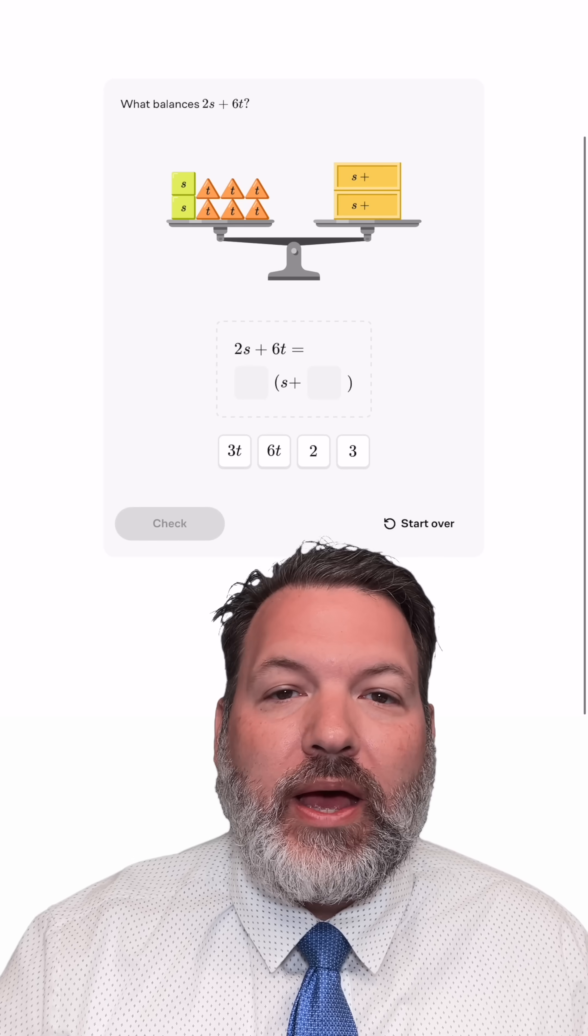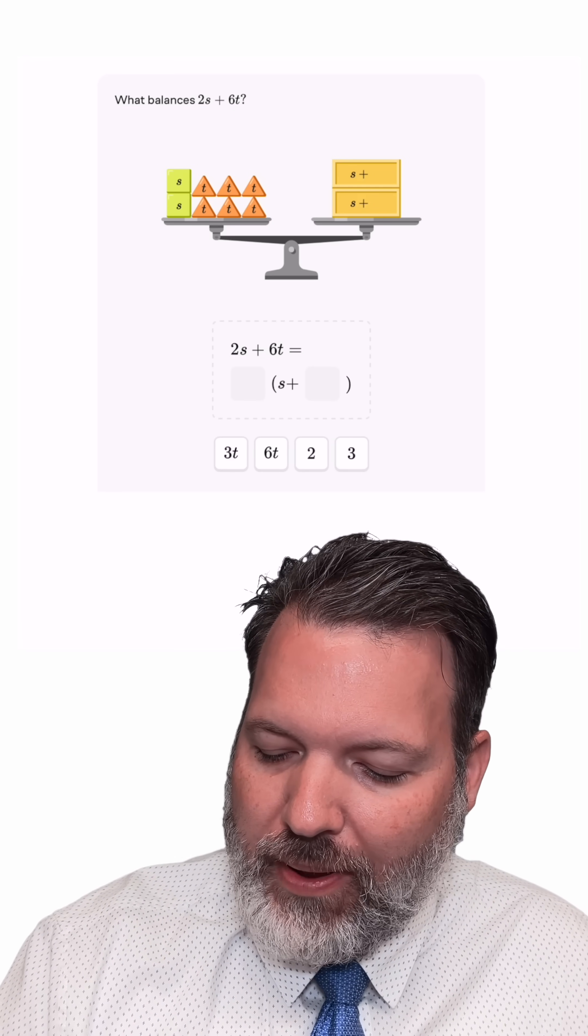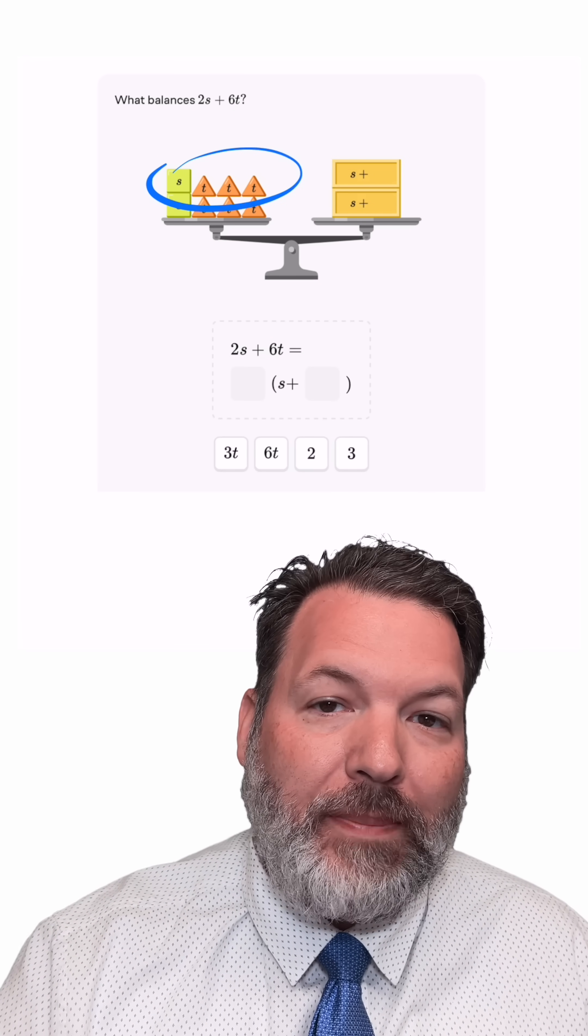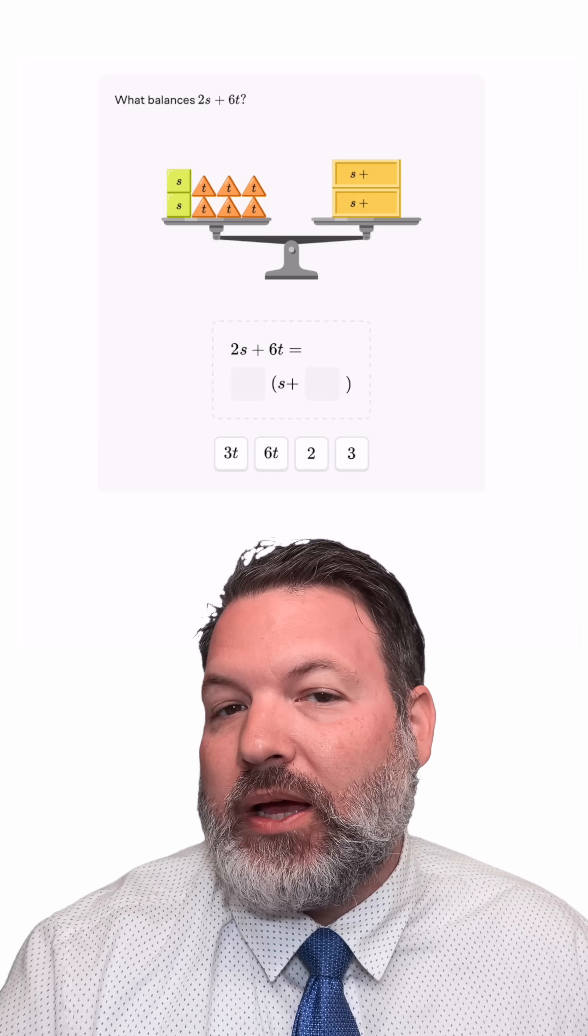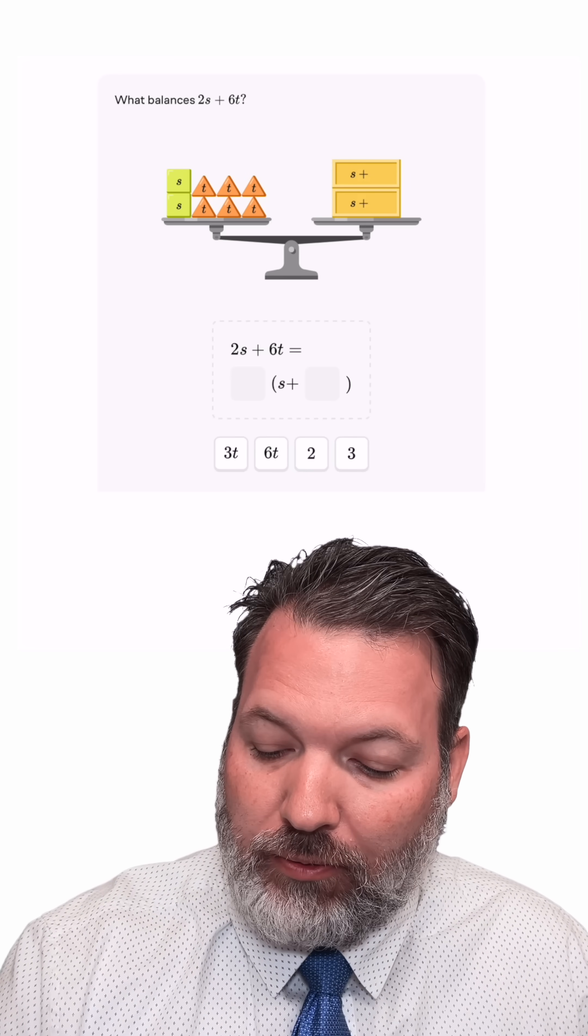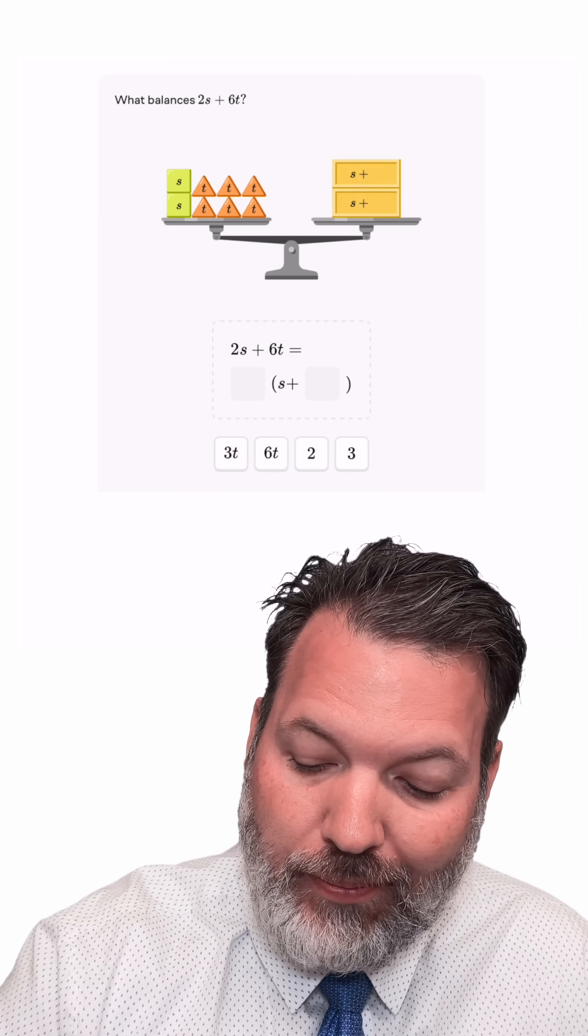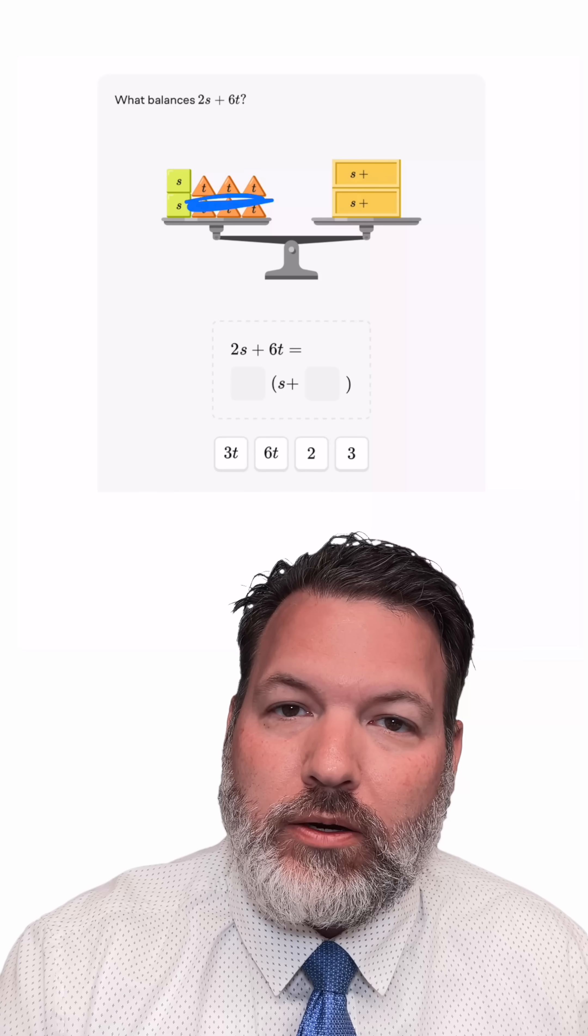Consider an expression like 2s plus 6t. If we want to make sure this is balanced, we could imagine packing away the different items that we have on the left side of this scale right now. We have an s already, but we need to do something with the t triangles.